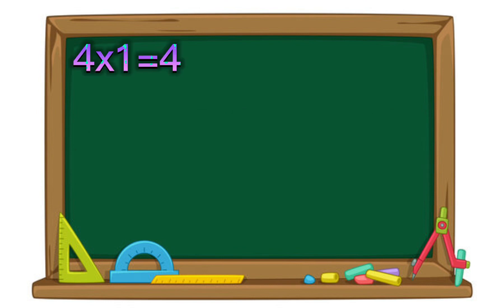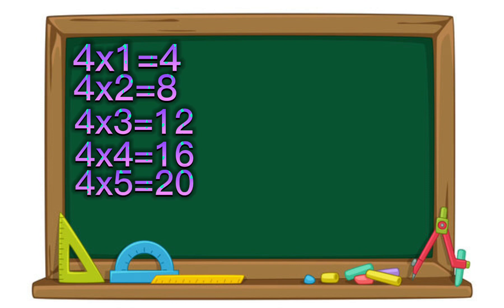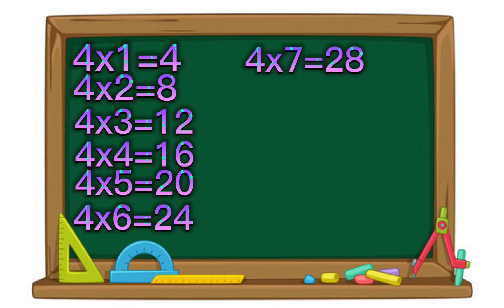4 times 1 equals 4. 4 times 2 equals 8. 4 times 3 equals 12. 4 times 4 equals 16. 4 times 5 equals 20. 4 times 6 equals 24. 4 times 7 equals 28.